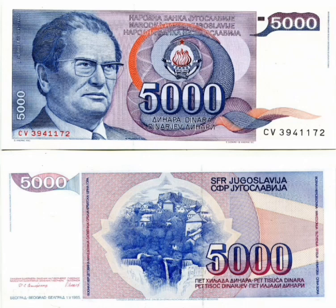It would have a historical figure from that republic on the front and a motive from that republic on the reverse. The smallest banknote of 10 dinars would represent the smallest republic, Montenegro, and the largest existing of 1,000 dinars, the largest republic, Serbia.